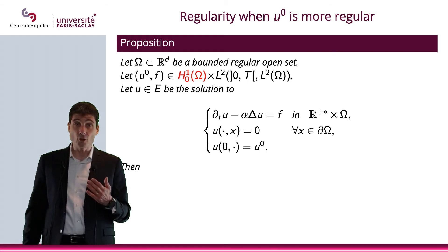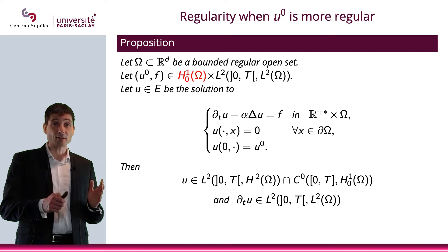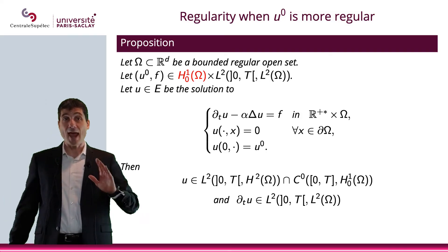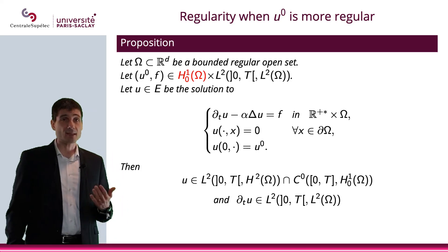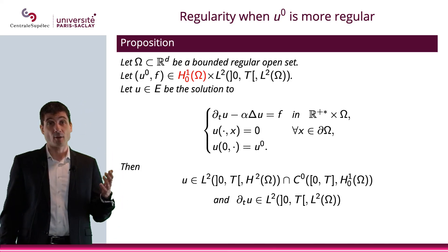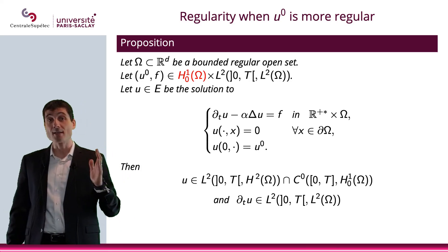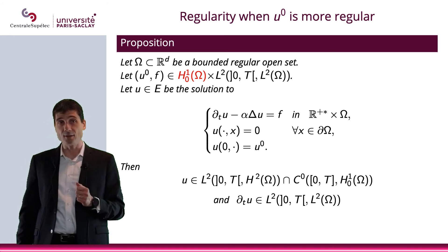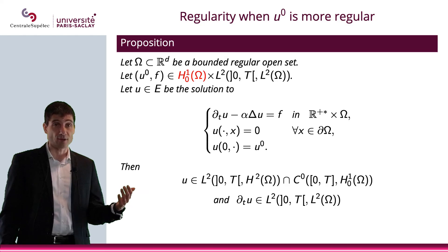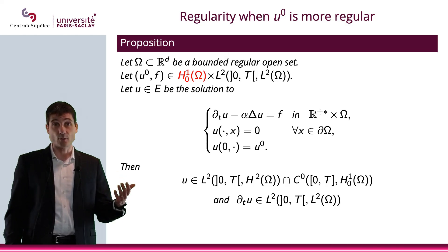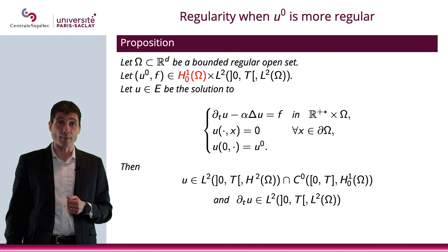What happens is that the solution will be L2(0,T; H2) instead of H1_0, intersected with C0(0,T; H1_0) instead of L2. And on top of this, I will have the time derivative of u, which will be in L2(0,T; L2(Ω)).